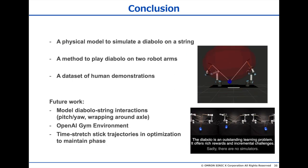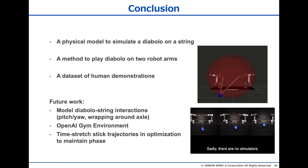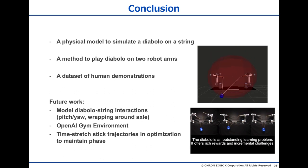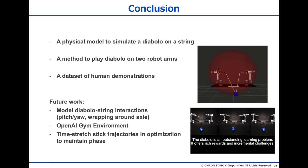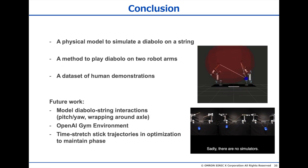To summarize, we presented a physical Diabolo model that simplifies the interaction between Diabolo and string. We also showed how this model can be used to generate robot motions to play Diabolo, and we recorded a dataset to validate our results and seed machine learning approaches. In the future, we want to share an OpenAI Gym environment with this model, so that the problem can be tackled by the whole community. We also want to expand the Diabolo model to include the changes in pitch and yaw, and what happens when the string wraps around the axle, which is required for advanced tricks. Thank you for listening.